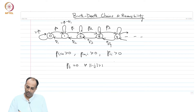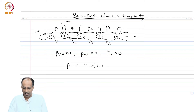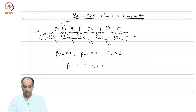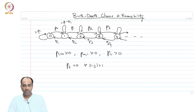Now, for this birth-death chain, the question is when is the chain positive recurrent — can we say something about its steady-state behavior, its stationary distribution? We are taking the forward jump probabilities as P_i's and backward jump probabilities as Q_i's. So, if you are in state i, the probability of a birth is P_i and the probability of a death is Q_i. And 1 minus P_i minus Q_i is the probability of a self-transition into state i.